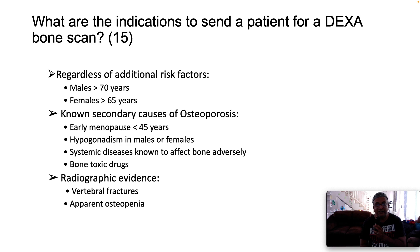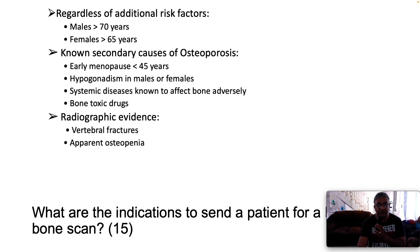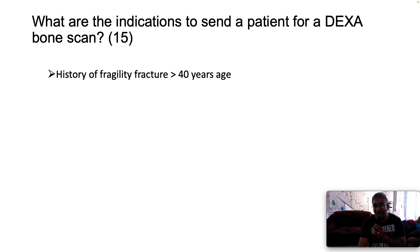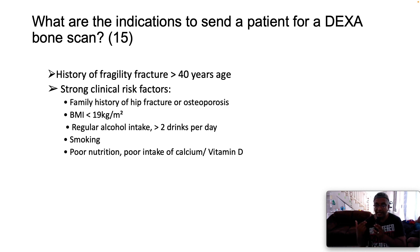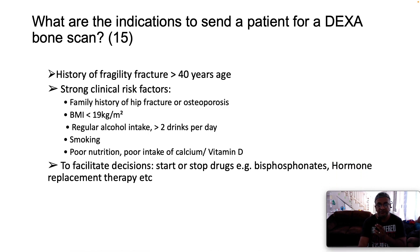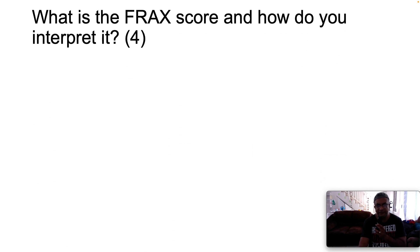Further indications include radiographic evidence of vertebral fractures or suspected osteopenia, a history of fragility fracture above age 40, and strong clinical risk factors such as family history of hip fracture, BMI below 19, regular alcohol intake (more than two drinks per day), smoking, poor calcium and vitamin D intake. Also, to facilitate treatment decisions — for example, whether to start or stop bisphosphonates or hormone replacement therapy.